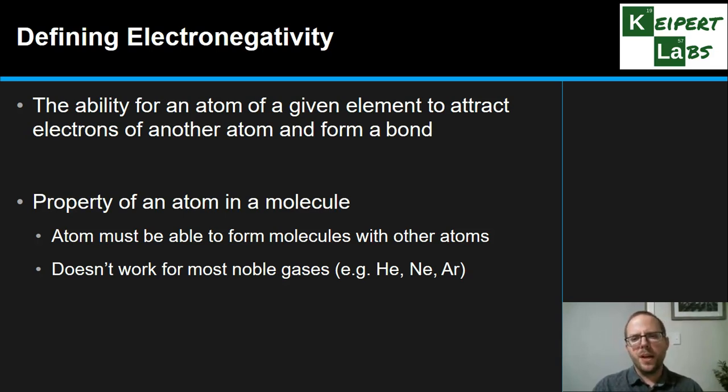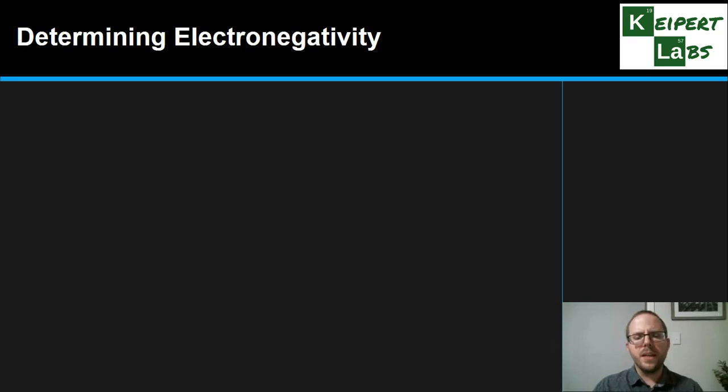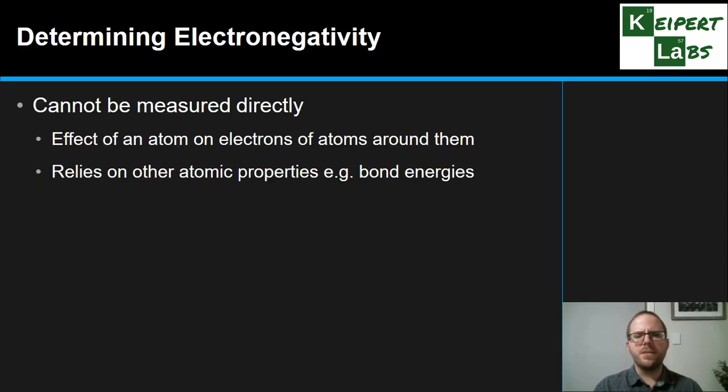So how do we actually work it out? Well, the reality is that when we're trying to determine electronegativity, you don't just get an electronegativity probe and stick it into a sample of that element and see what it tells you. It's not something that we experimentally observe, or at least not something that we can set out to measure. We can use a range of experimental data in order to actually figure it out.